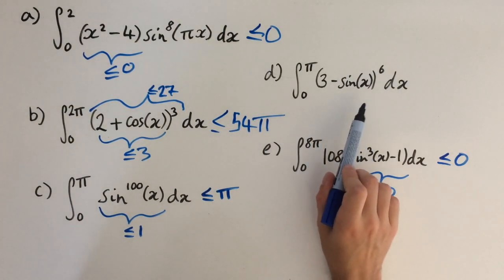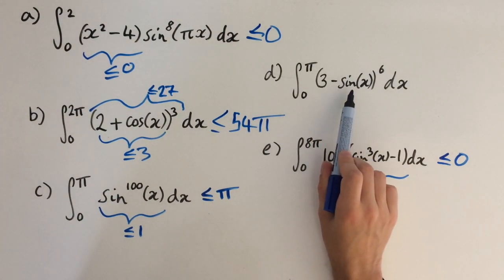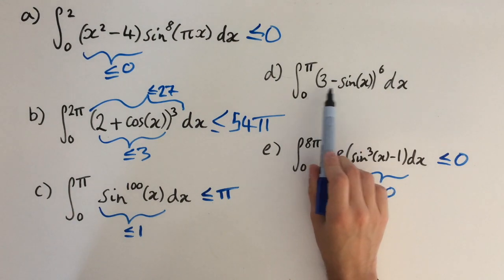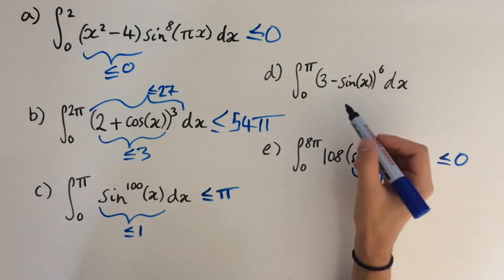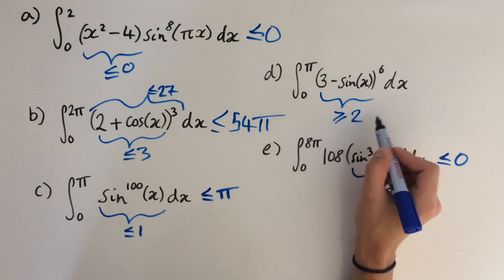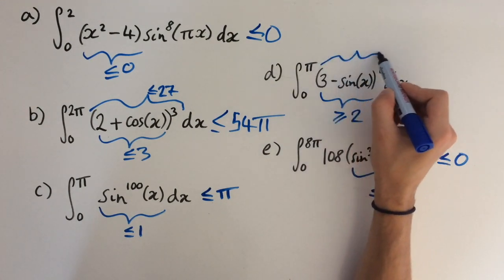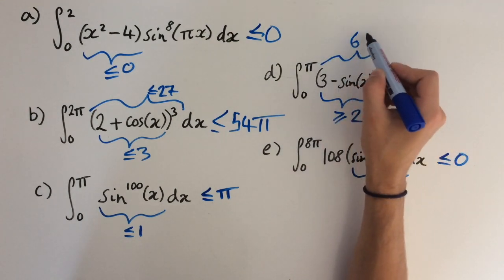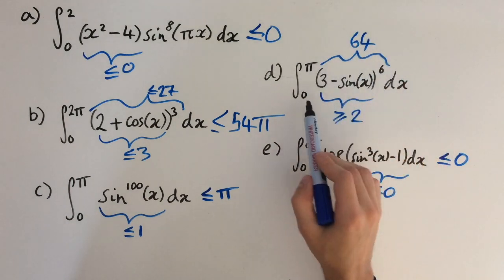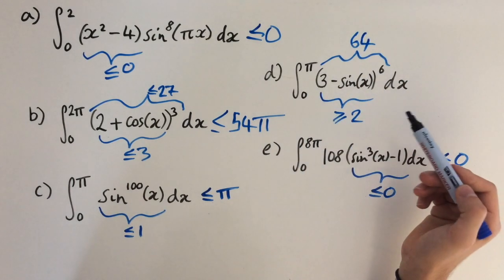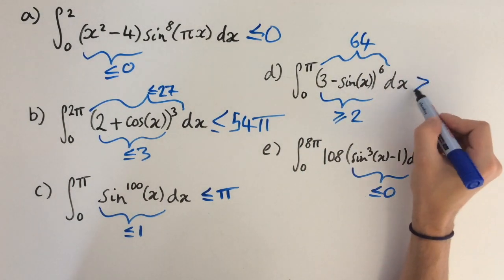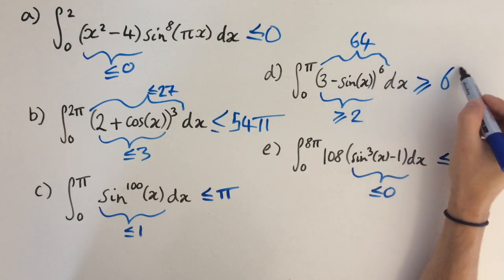Now for our final integral, we want to bound this below. Sine of x is between minus 1 and 1, so 3 minus sine of x is always greater than or equal to 2. 2 to the power of 6 is simply 64. And if we integrate 64 in the range between 0 and pi, we'll get 64 pi. So we know this integral is always greater than or equal to 64 pi.